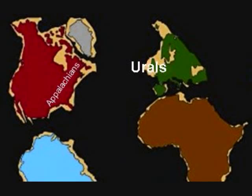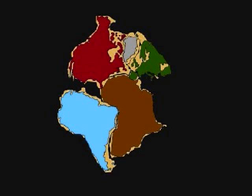Second, many of the mountain ranges on different continents have the same types of rocks. A good example is the Appalachian Mountains in North America, which are very similar to the Ural Mountains in Europe. This indicates that they were formed before the breakup of the supercontinent.